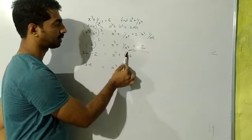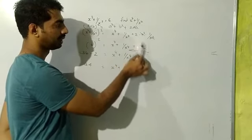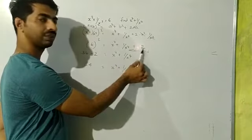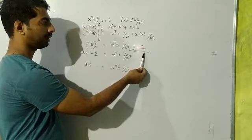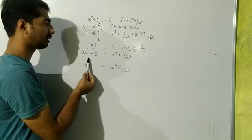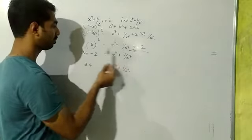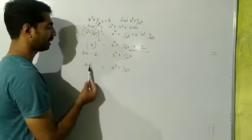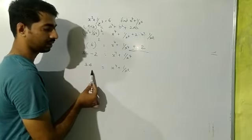Then x⁴ + 1/x⁴ + 2 = 36. That 2 should be transferred to the other side, so plus 2 will convert into minus 2, which is 36 - 2, which is 34.